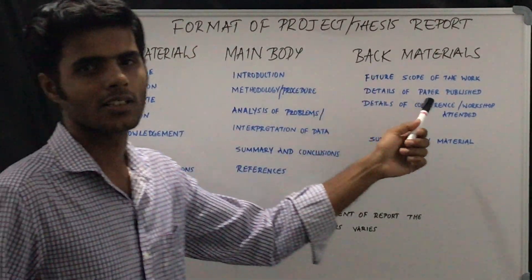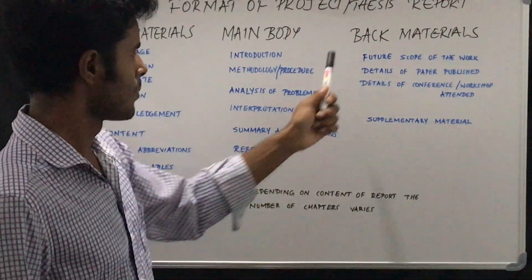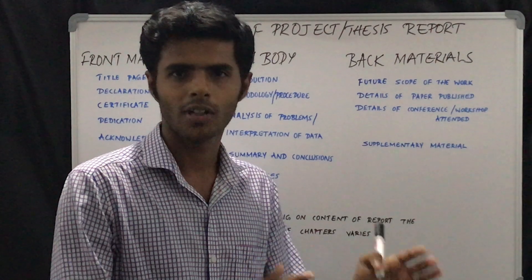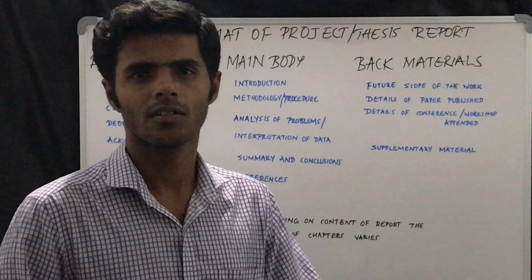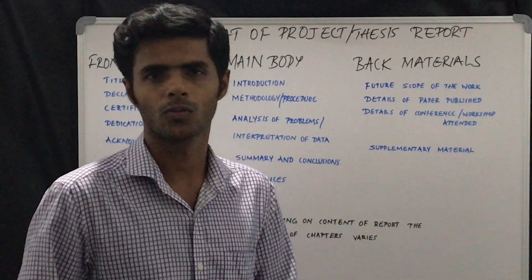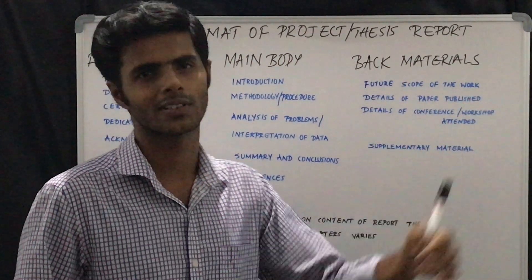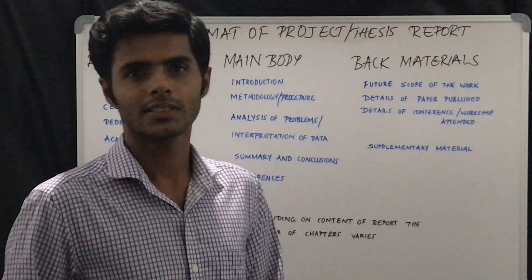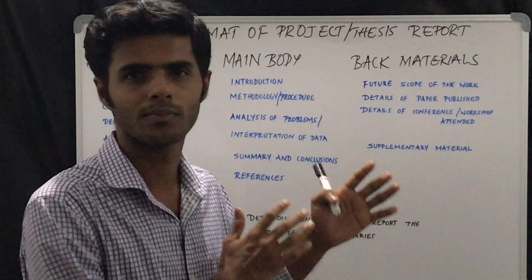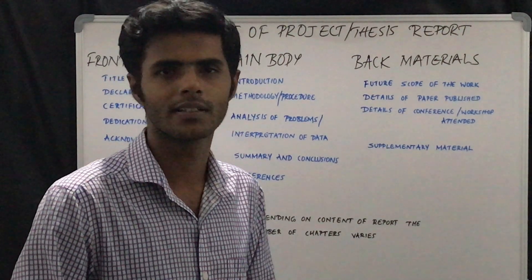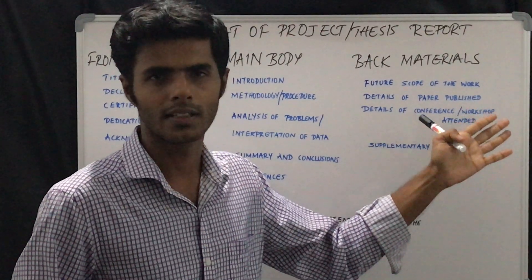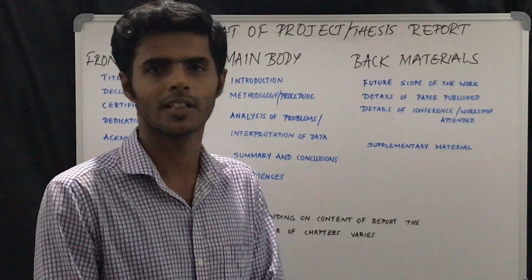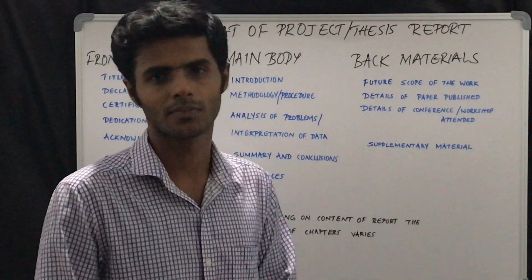Coming to the third section — back materials — the first one will be the future scope of the work: whatever work you have done, what people can continue with in the future. The next one will be the details of papers published from your project or research work. Some people include the first page of their publication at the end of the thesis, and that is also possible here.